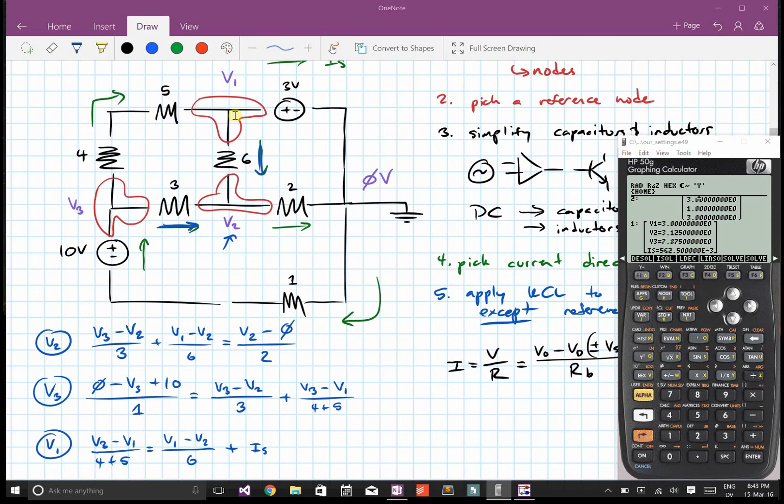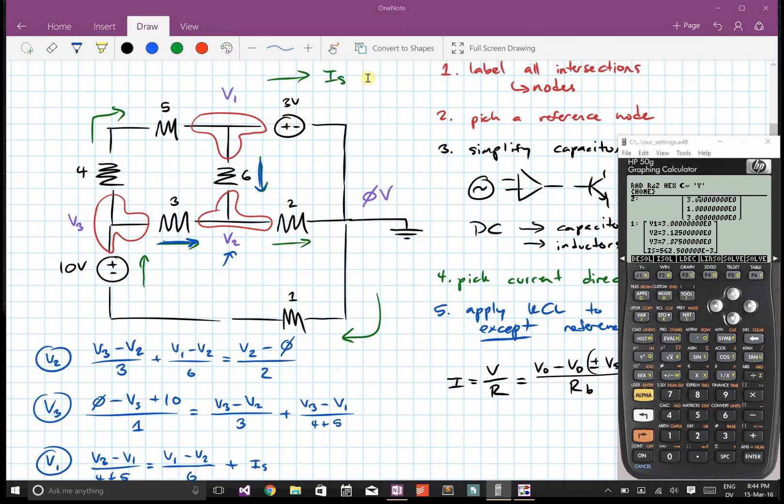And now we know that V1, that's three volts, which I can tell just by looking at it. And V2 is 3.125 volts. V3 is 7.875 volts. And IS is 562 milliamps.